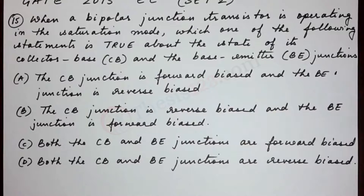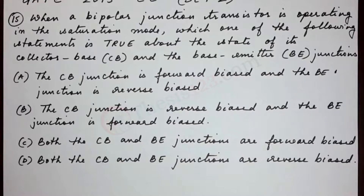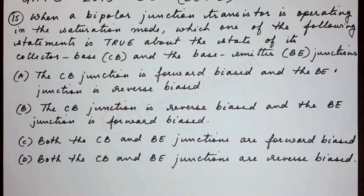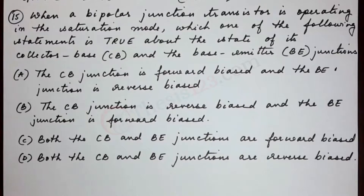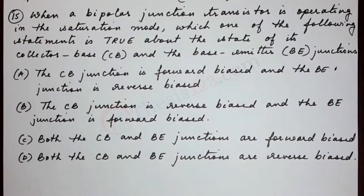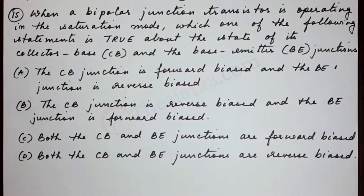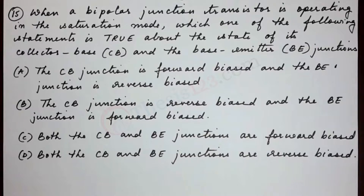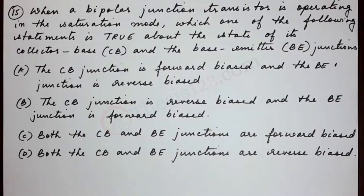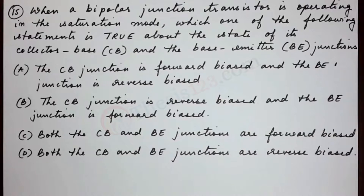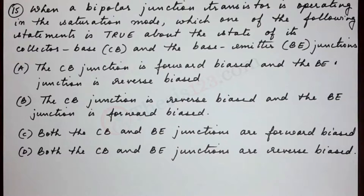The options given to us are: A — the CB junction is forward biased and the BE junction is reverse biased. B — the CB junction is reverse biased and the BE junction is forward biased. C — both the CB and BE junctions are forward biased. D — both the CB and BE junctions are reverse biased.